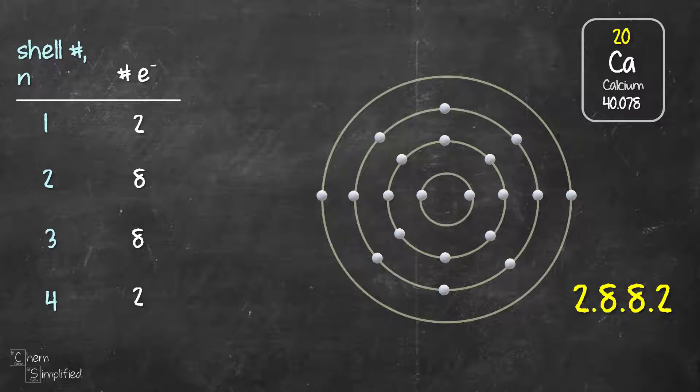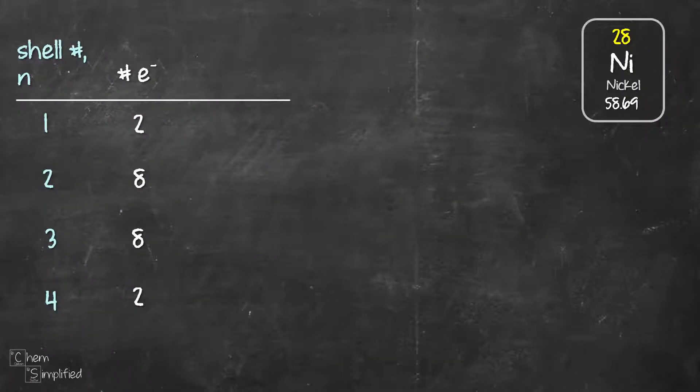Now so far we've only worked with elements containing up to 20 electrons. What if we have more than 20 electrons? Like for example nickel that has 28 electrons. Since it exceeds 20 electrons, we now need to know what's the maximum number of electrons each shell can hold.